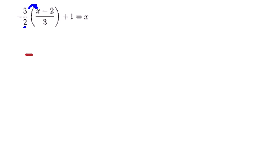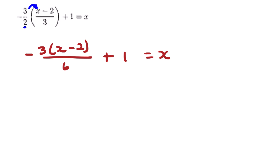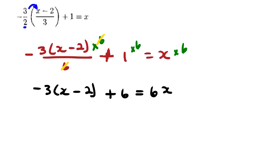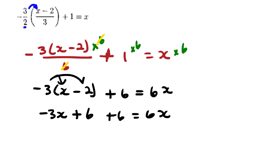Going back to our question and multiplying out, we get negative 3(x minus 2) over 6 plus 1 equals x. To get rid of the fraction we multiply every term by 6 — the 6 cancels the denominator and we are left with negative 3(x minus 2) plus 6 equals 6x. Expanding the bracket: negative 3x plus 6 plus 6 equals 6x.